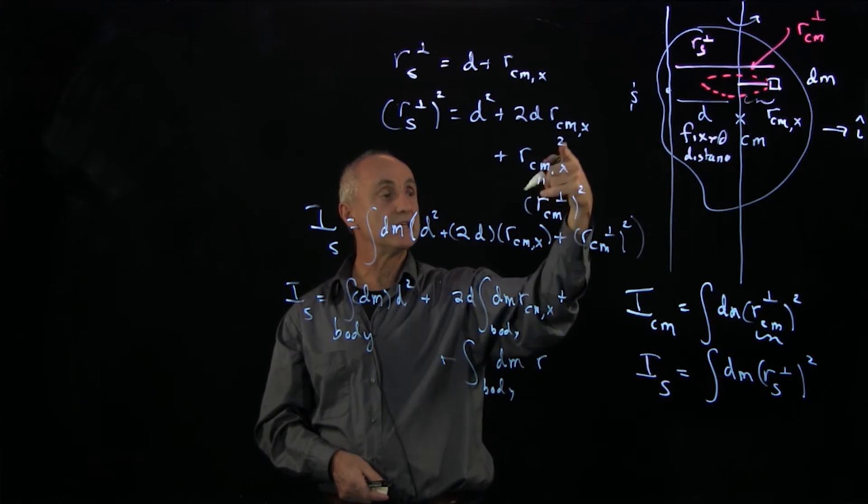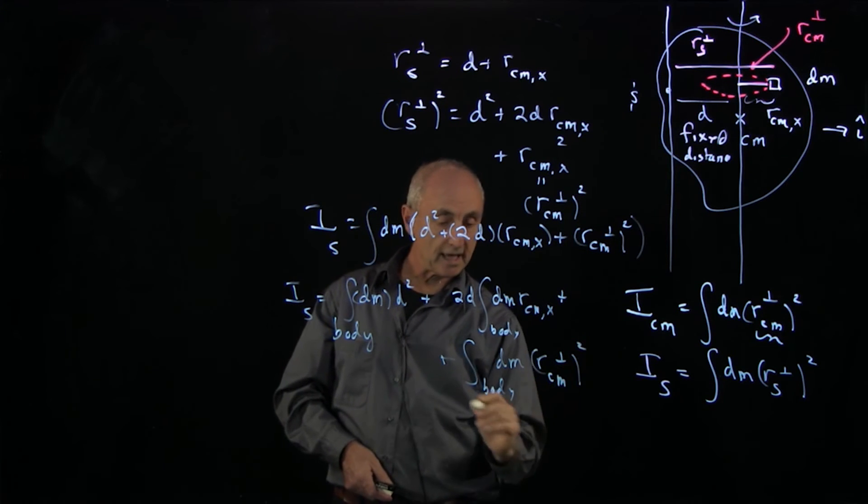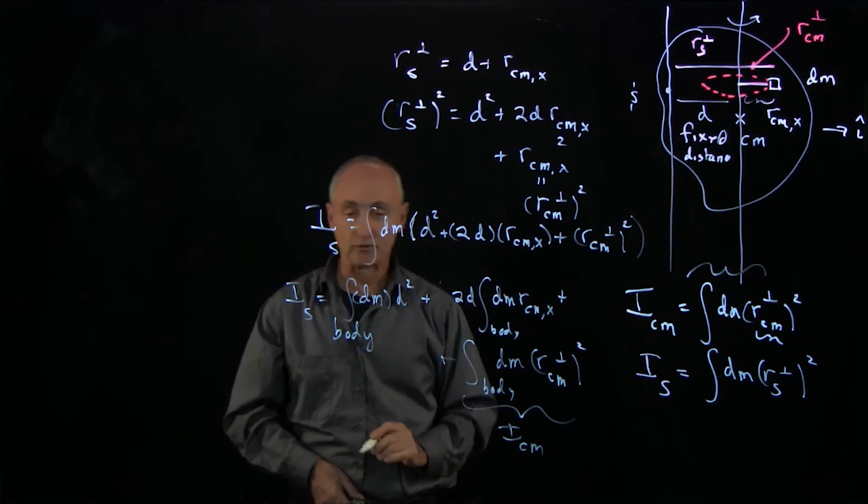Since r_cm_x is the r_perp, I'll write it as r_perp squared. And you can see that this term is precisely the moment of inertia about the center of mass.